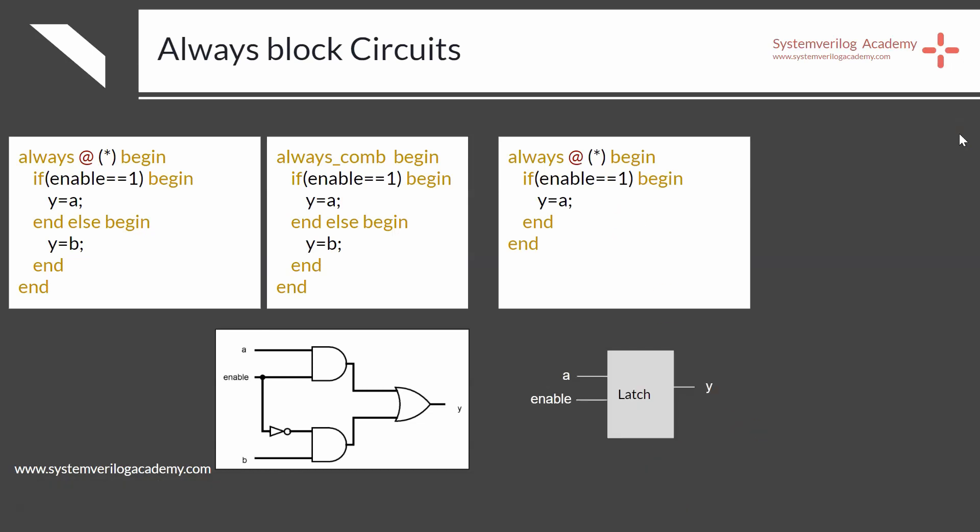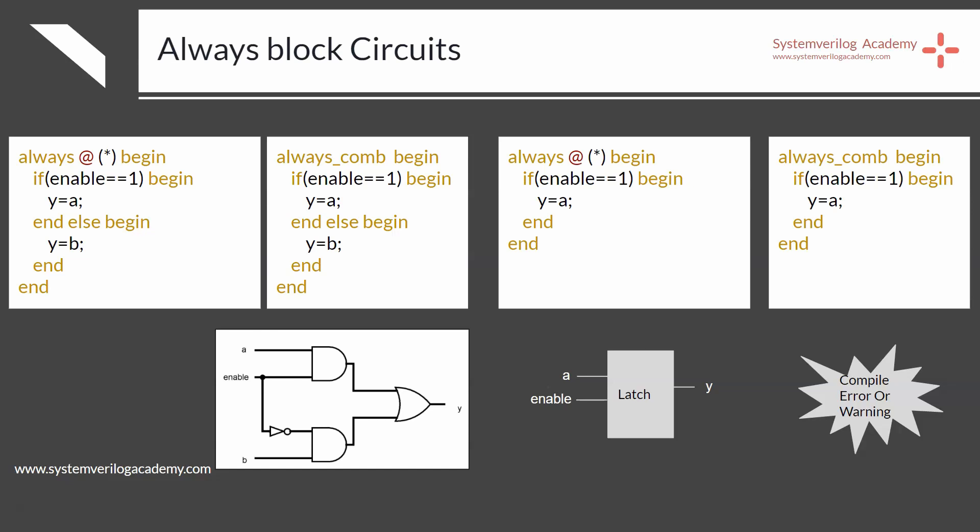If you use always_comb instead of always @(*) in the same case, the software tool will issue an error or warning because it detects a sequential circuit being generated within the combinational construct always_comb. This is why you should use specific constructs for combinational, latch, and flip-flop logic. If your actual intention was to generate a latch, you should use always_latch instead of always_comb.